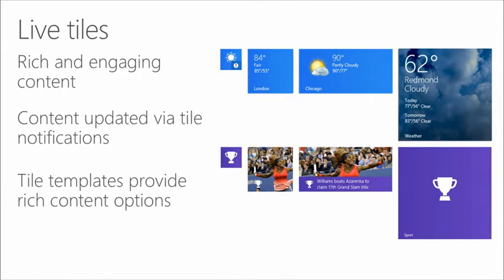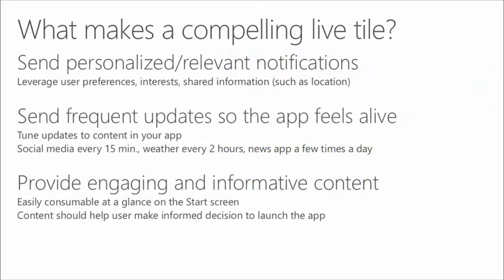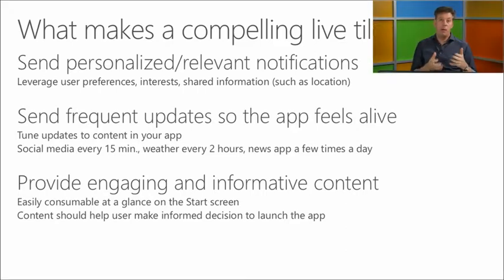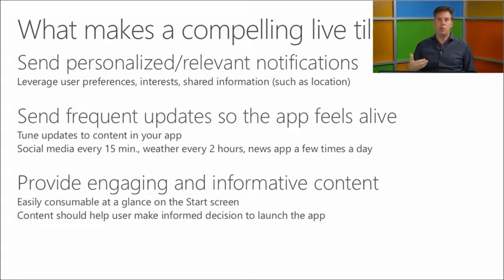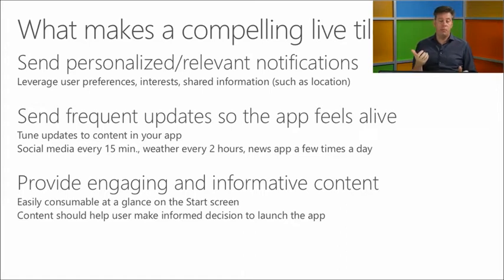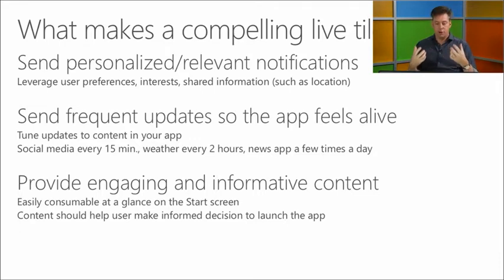There are different tile templates to provide rich content options. What makes a compelling live tile? It should be personalized and relevant for the user. For example, pinning the basketball tile should show basketball content — not general sports. Even if users set preferences in your app, make use of that to tailor what kind of live tile content is shown, so it's custom to the user and draws them back faster.